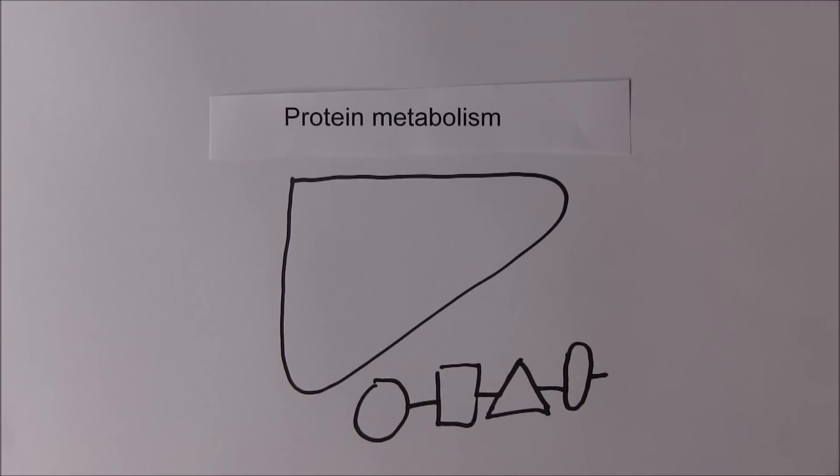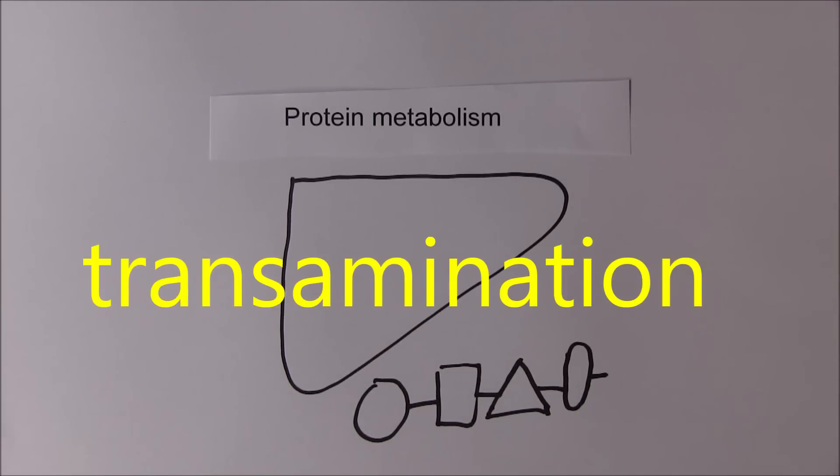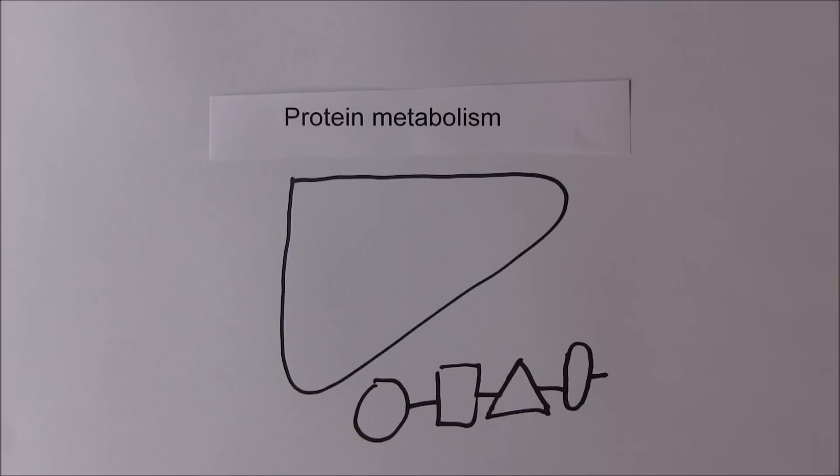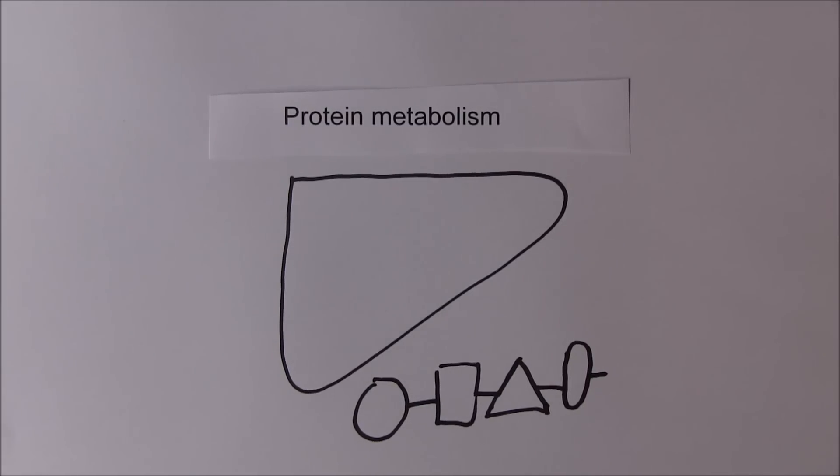This process of conversion of one amino acid to another is a fundamental function of the liver, and that's called transamination. So transamination is changing one amino acid into another. Essential amino acids can be converted into non-essential amino acids. But the non-essential can't be converted into the essential amino acids, because they are essential as part of the diet.